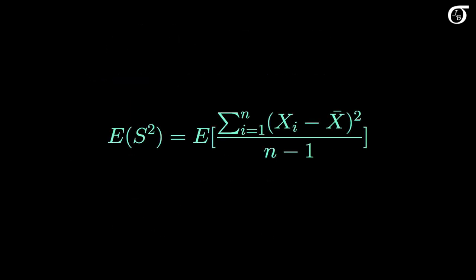We need to show that the expectation of the sample variance s squared — the expectation of the sum of x sub i minus x bar squared divided by n minus 1 — is equal to sigma squared, the population variance. To make the slides a little less busy, I'm going to omit the limits of summation, but we'll always be summing from 1 through n. At first I'm going to work out the expectation of just the numerator and ignore the n minus 1 for now.